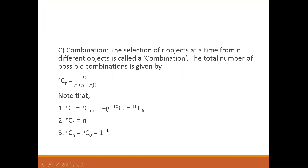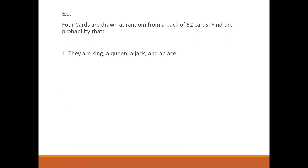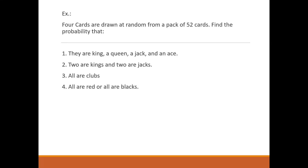Please note down this as well if you have not done it before. To begin with the first problem: we have four cards which are drawn at random from a pack of 52 cards. Find the probability that they are a king, a queen, a jack, and an ace. The second part: two are kings and two are jacks. And the third one: all are clubs. And one more: all are red or all are black.